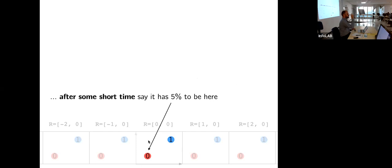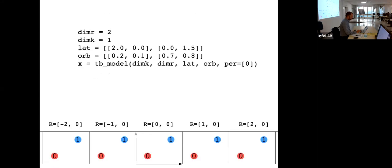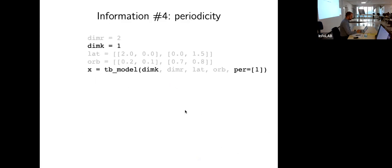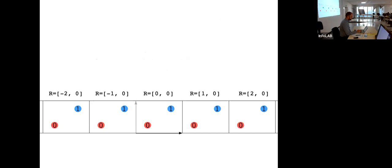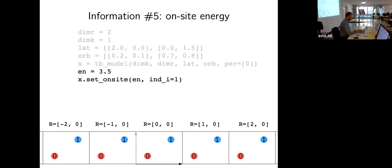There was a question: is it possible to set dimensionality to zero? Yes — if you set dimensionality to zero, you have only a molecular model, like a carbon monoxide molecule. There was also a question about multi-orbital sites and how to define the on-site matrix. You just call the set_onsite function one after another for each orbital index — for example, specify on-site energy for orbital 1, then orbital 0, and so on.